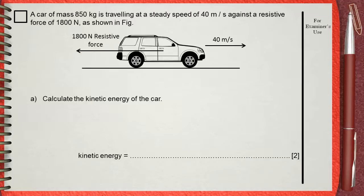A car of mass 850 kilograms is traveling at a steady speed of 40 meters per second against a resistive force of 1,800 newtons as shown in figure A. Calculate the kinetic energy of the car.